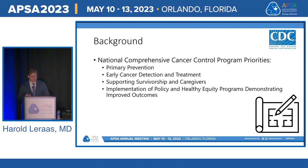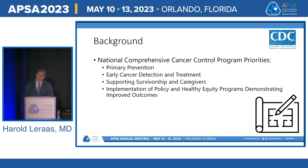The goal of the National Comprehensive Cancer Control Plan was to improve primary prevention, enhance early detection and treatment of cancer, support survivors and caregivers, and implement health policy and health equity programs that demonstrate improvements in cancer outcomes.